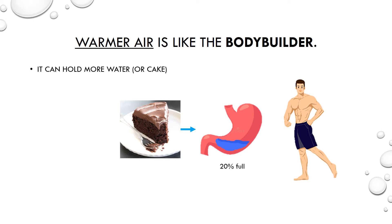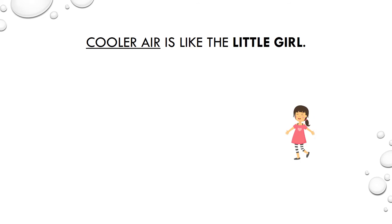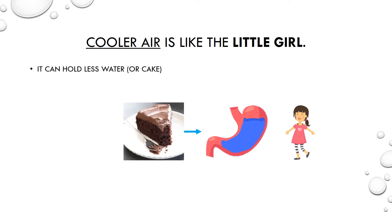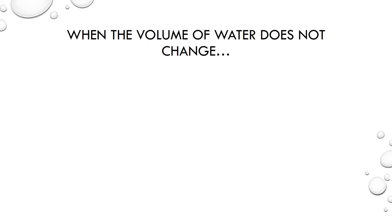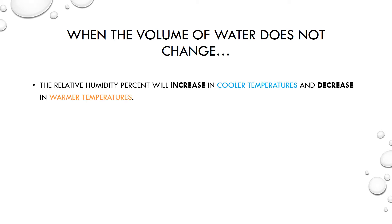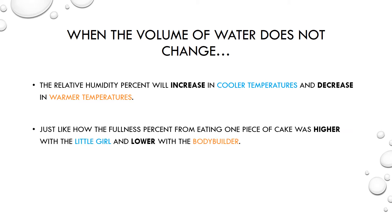That one piece of cake only made the bodybuilder about 20% full. Cooler air, then, is like the little girl. The little girl can eat less cake, just like how cooler air can hold less water — they each have a lower capacity. That same piece of cake caused the little girl to be 90% full. When the amount of water in the air does not change, the relative humidity percent will increase when the temperature gets cooler, and it will decrease when the temperature gets warmer. This is just like how the fullness percent increased when the little girl ate the cake, and decreased when the bodybuilder ate the cake.